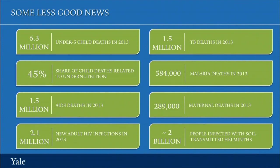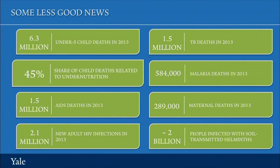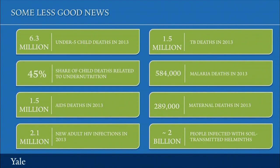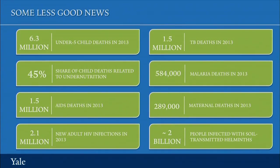About 45% of these deaths are related to the fact that these children are under-nourished. They either don't get enough food, don't get a diverse enough diet, or they're lacking in certain micronutrients. These deaths would not occur if these children were better nourished.